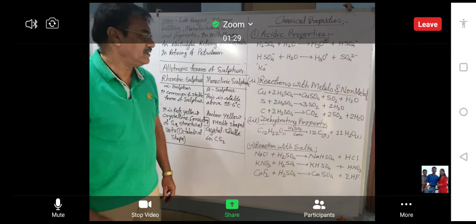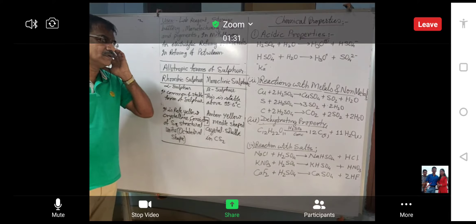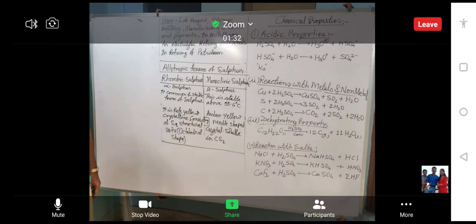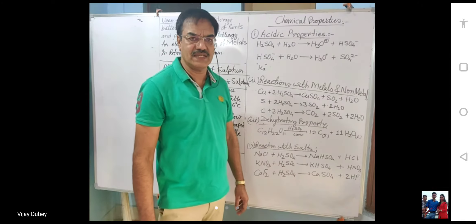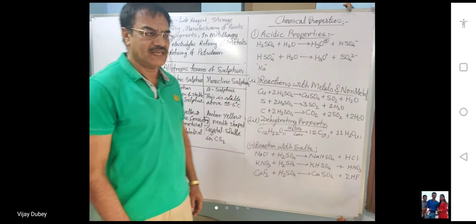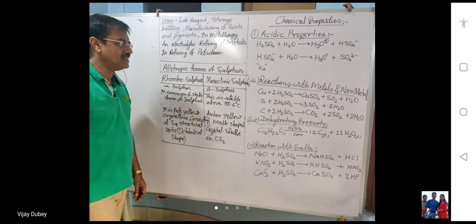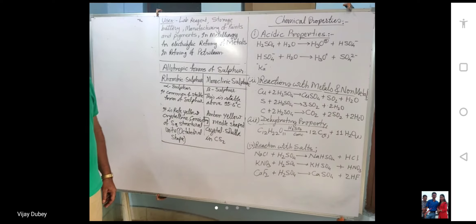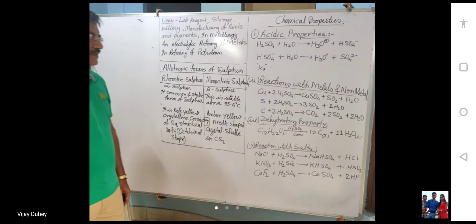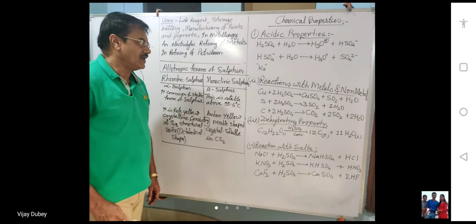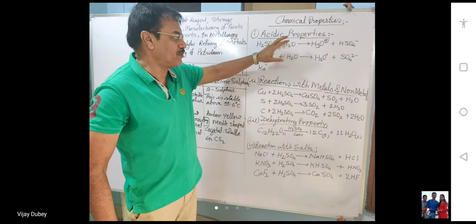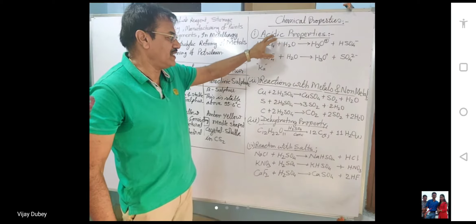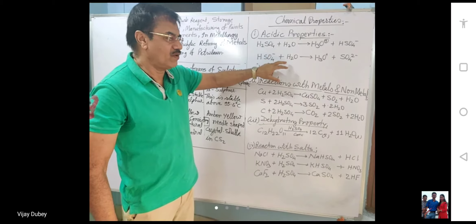Welcome back for the discussion of chemical properties of sulfuric acid. We had seen preparation and physical properties. Now let us take some chemical properties. Sulfuric acid is a dibasic acid — it provides 2H⁺ ions when dissolved in water.